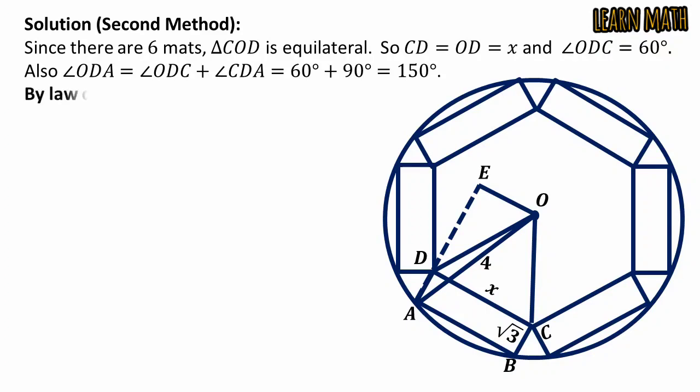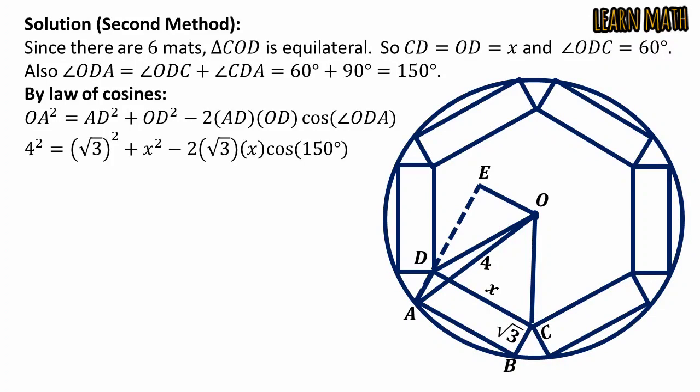By using the law of cosines, we can write OA squared equals AD squared plus OD squared minus 2 times AD times OD times cosine angle ODA. Putting values in this formula, we get 4 squared equals square root of 3 squared plus x squared minus 2 times square root of 3 times x times cosine 150 degrees.